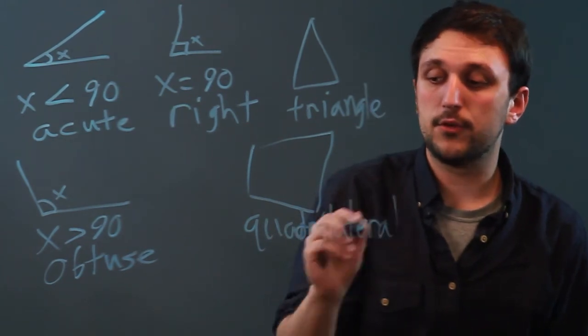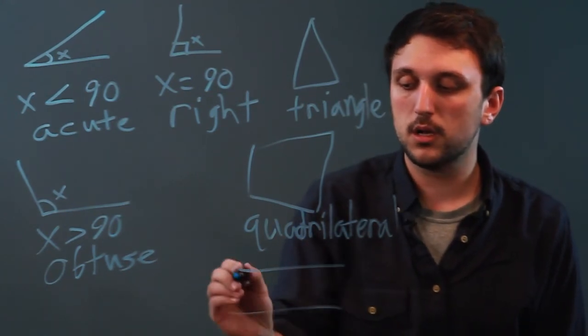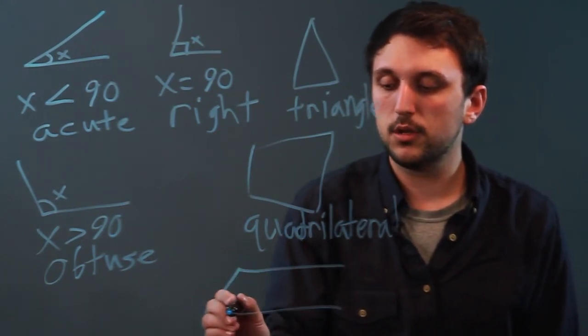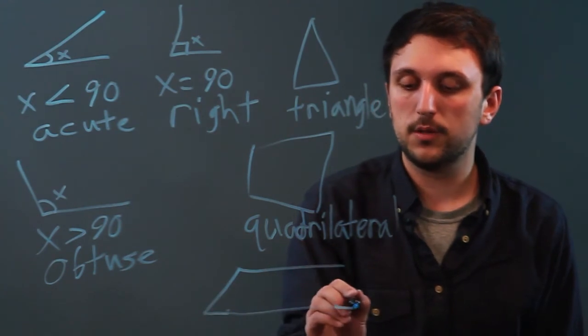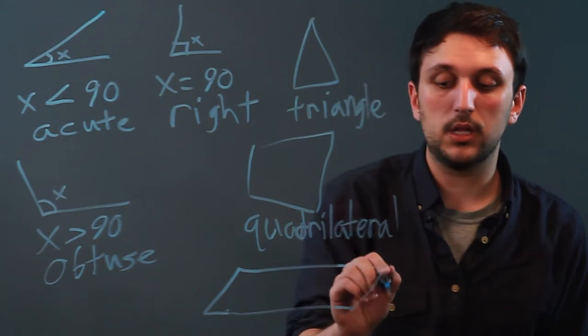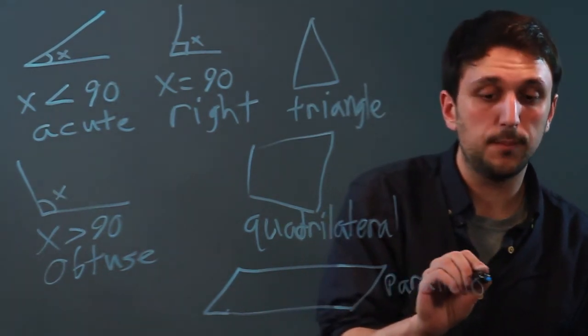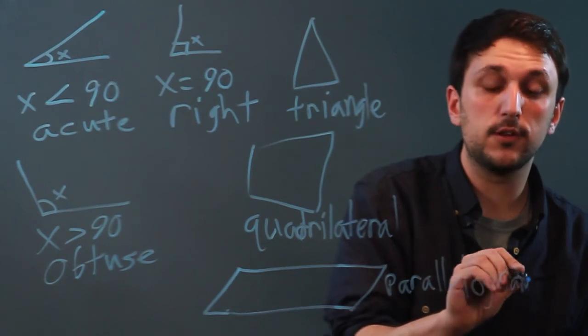Now there's types of quadrilaterals. For example, if two lines are parallel here and two lines are parallel here, that's called a parallelogram. Never easy to spell.